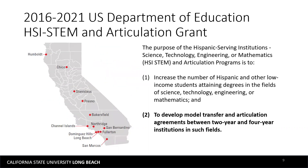In 2016, the U.S. Department of Education awarded HSI STEM and Articulation grants, and 12 CSUs were awarded this grant. The purpose of the grant is twofold: first, to increase the number of Hispanic and other low-income students attaining degrees in the fields of STEM; and second, to develop model transfer and articulation agreements between two-year and four-year institutions in such STEM fields. Transfer articulation was a key focus for all grantees in the 2016 cycle.